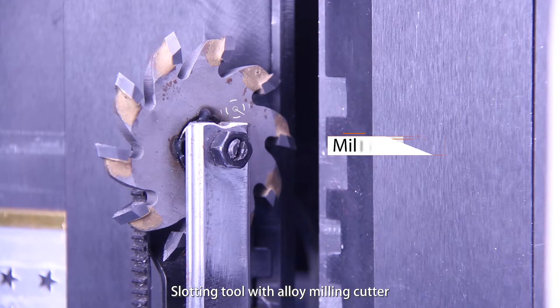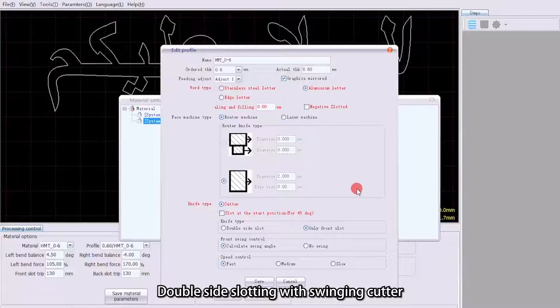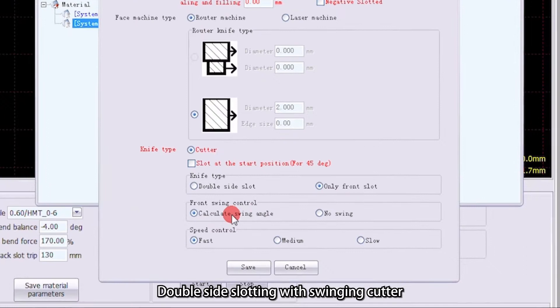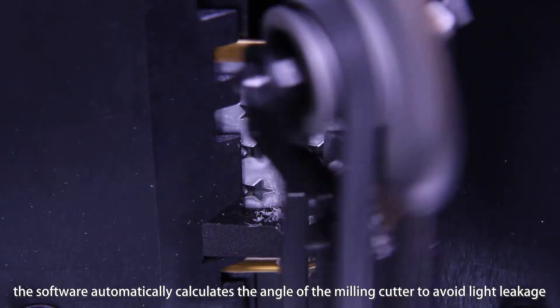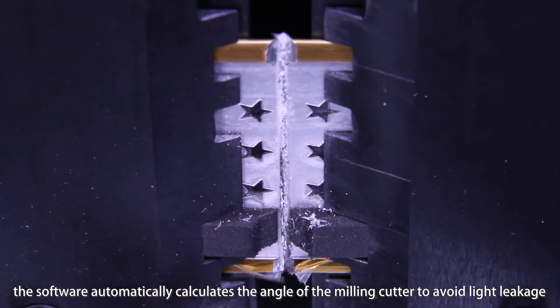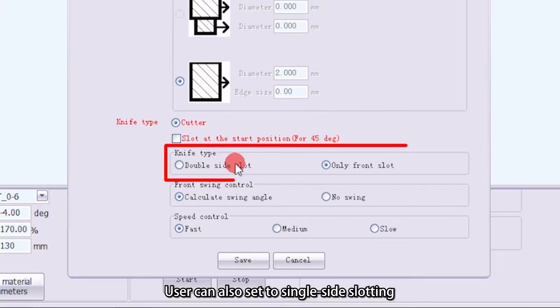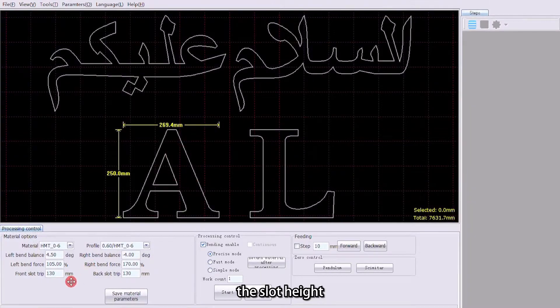Slotting tool with alloy milling cutter. Double side slotting with swing cutter. According to the angle of graphics, the software automatically calculates the angle of the milling cutter to avoid light leakage. User can also send to single side slotting.